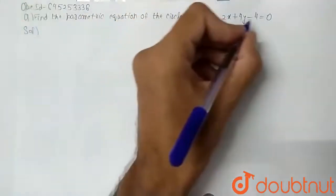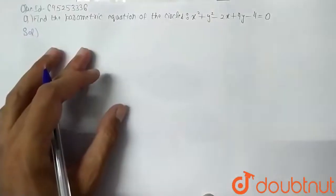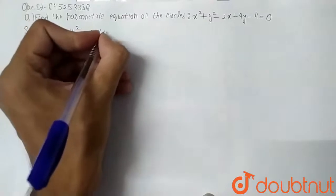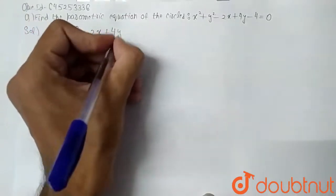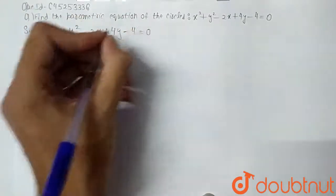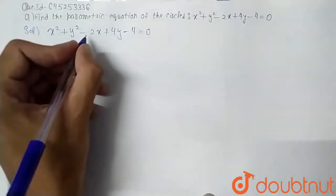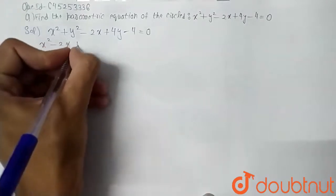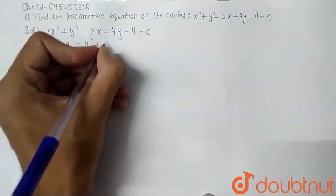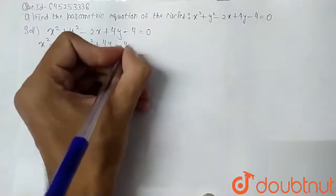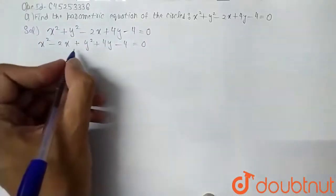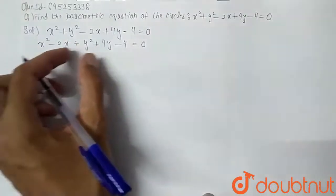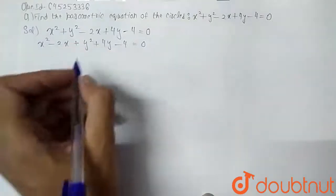First, we will write this equation: x² + y² - 2x + 4y - 4 = 0. We rearrange it as x² - 2x + y² + 4y - 4 = 0, grouping the x terms and y terms together.